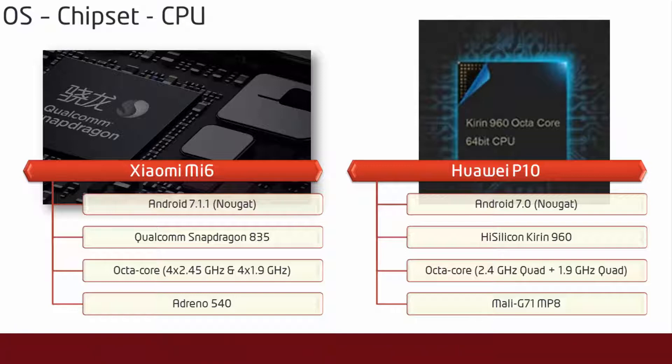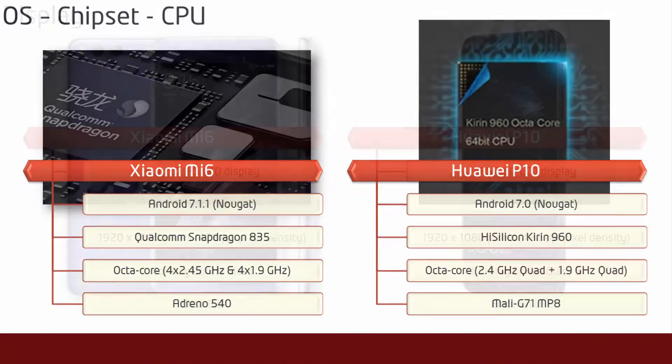Whereas the Huawei P10 also works on Android 7.0 Nougat and is powered by its own HiSilicon Kirin 960 processor with octa-core and GPU Mali G71 MP8.